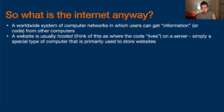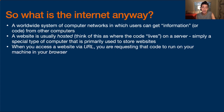A website is usually hosted — think of this as where the code lives — on a server. A server is simply a special type of computer primarily used to store websites, i.e. code that gets sent to your computer to run in your browser. When you access a website via URL, what you're doing is requesting that code which lives at that URL. The URL maps to a server address, so you're requesting that code to run on your machine in your browser.